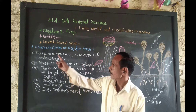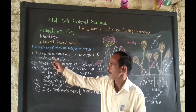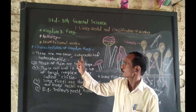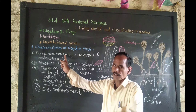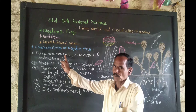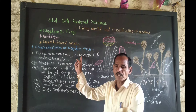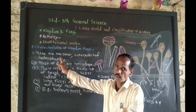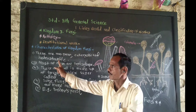The first characteristic of the Kingdom Fungi is that these are non-green eukaryotic organisms. Their mode of nutrition is heterotrophic, which is called heterotrophy.